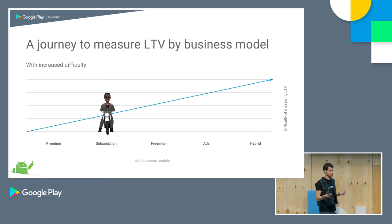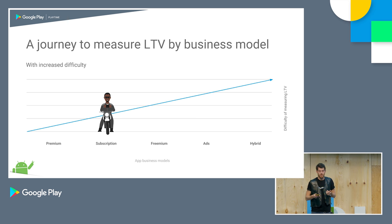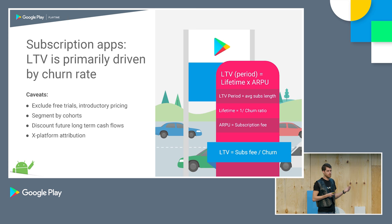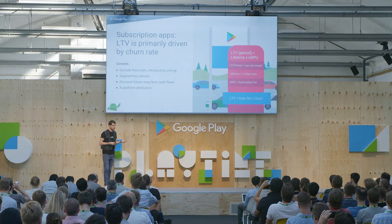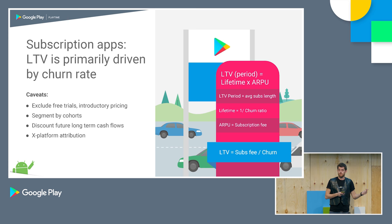The next business model we wanted to look at was subscriptions, because we wanted to remove the 'pay without having seen it' barrier and potentially increase installs. In subscriptions, the ARPU is fairly straightforward because it's fixed — your monthly, quarterly, or annual subscription rate is fixed, so you know that beforehand. The LTV in subscriptions is really driven by lifetime, which equals the average subscription rate, which depends on renewal rates at the end of the term, which in turn depends on churn.